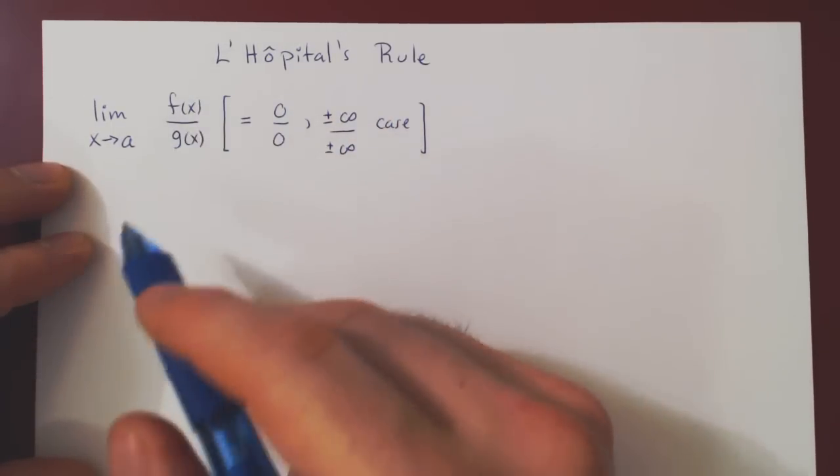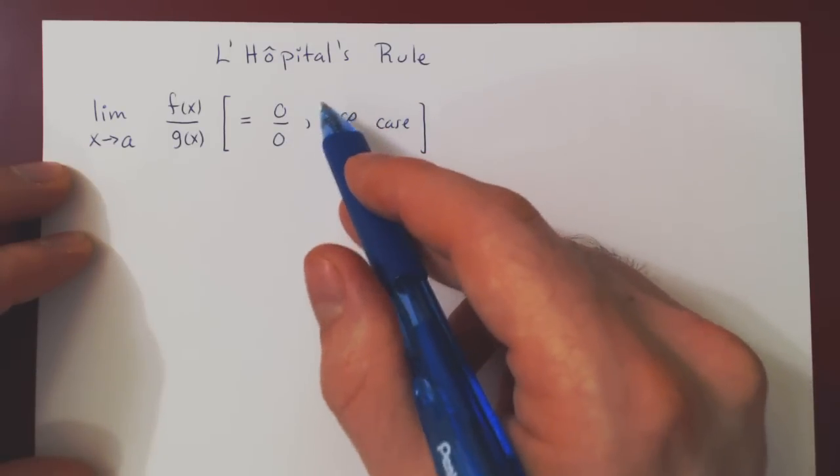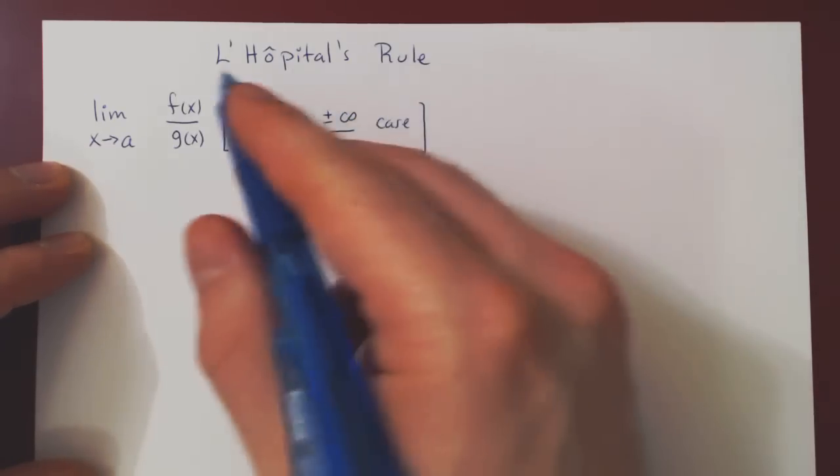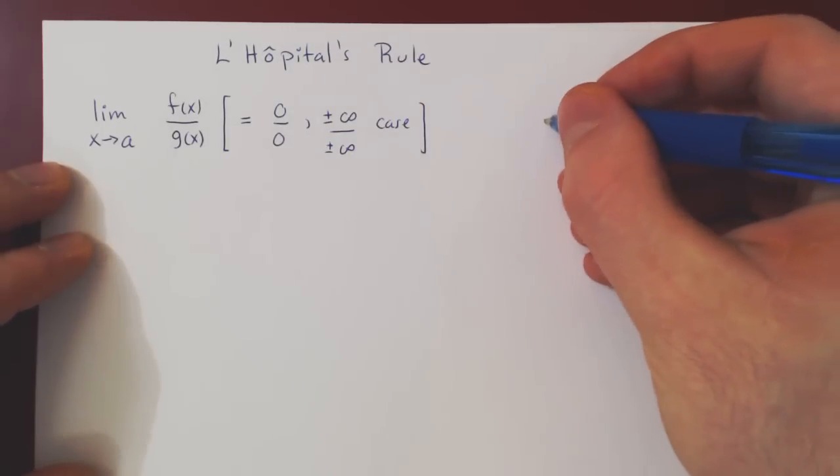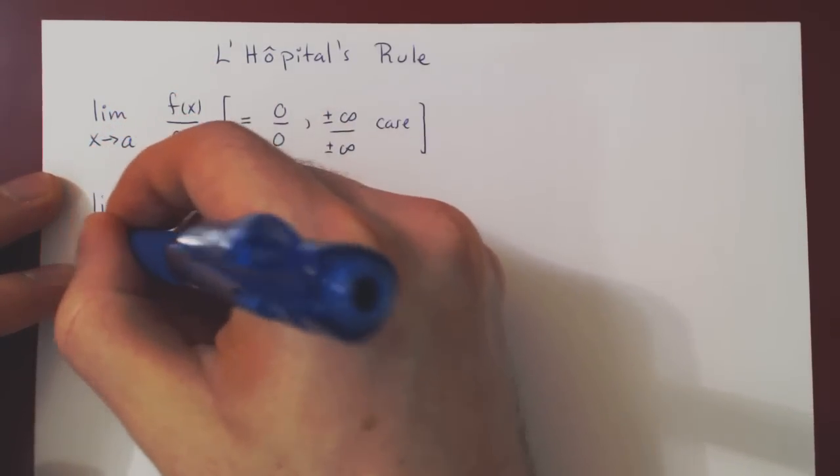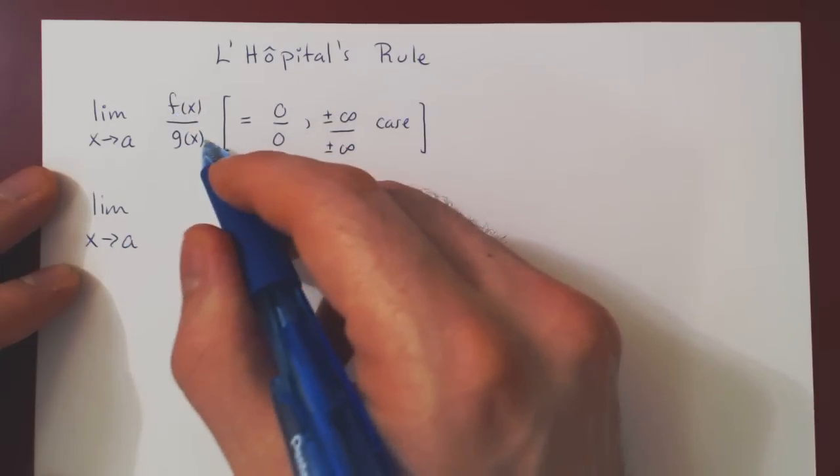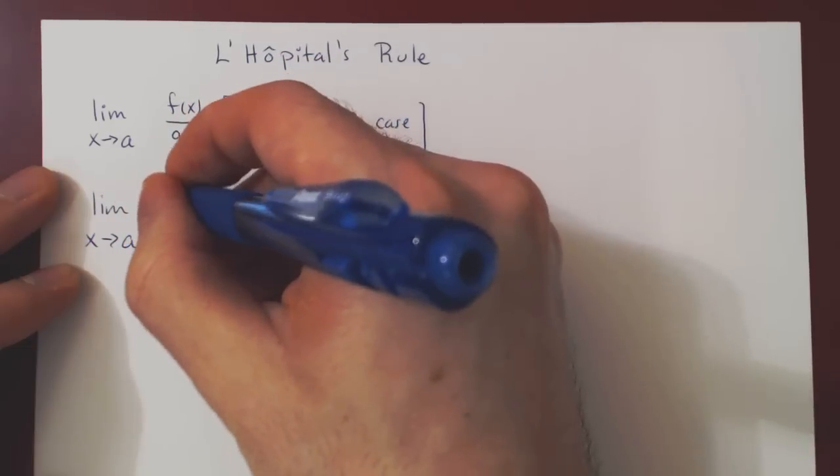So if we have a limit that yields a 0 over 0 case or infinity over infinity case, regardless of the sign, L'Hopital's rule says that we can consider the new limit, x still approaching a, but now we replace both the numerator and the denominator by their respective derivatives.